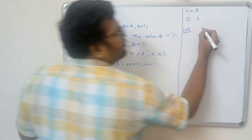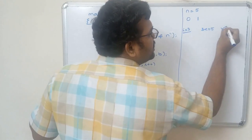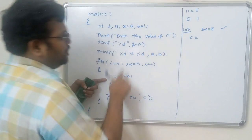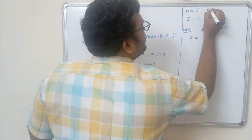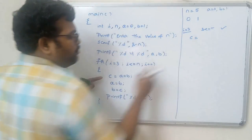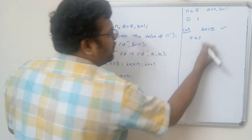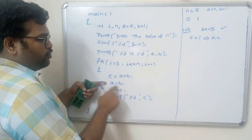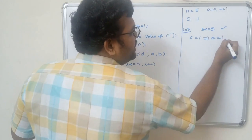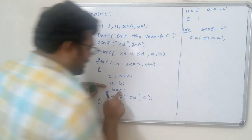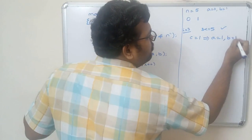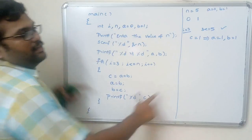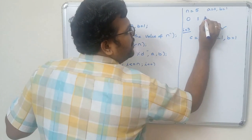i equal to 3, and 3 less than or equal to 5 is true. So c equal to a plus b: a is 0, b is 1, so c equals 1. Then a is assigned b's value, so a becomes 1. Then b is assigned c's value, so b becomes 1. printf prints c, so 1 is printed.